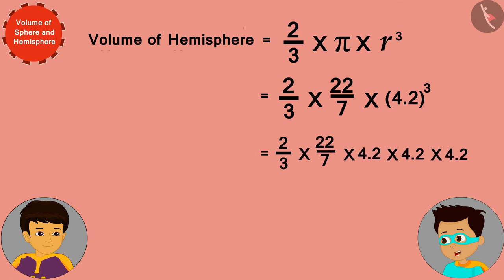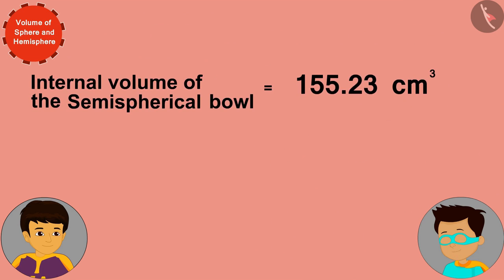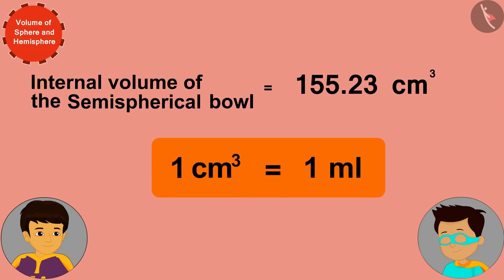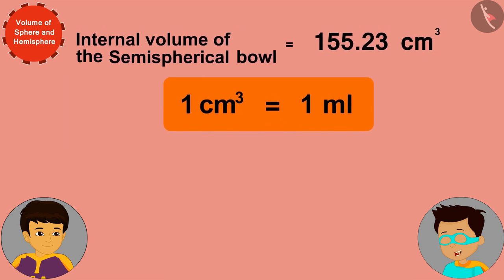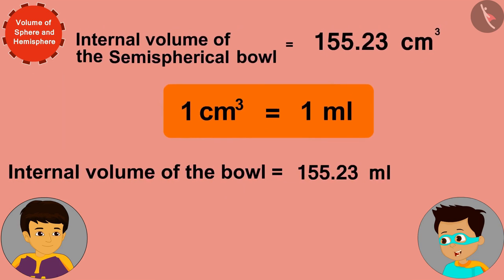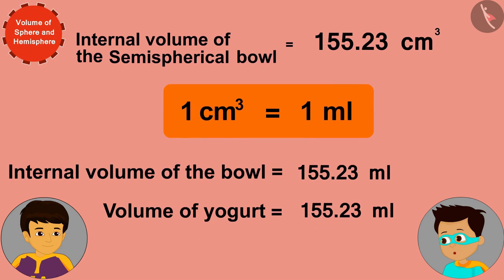The internal volume of the semi-spherical bowl is 155.23 cubic centimeters. Since one cubic centimeter is equal to one milliliter, the internal volume of the bowl — or the volume of yogurt — is 155.23 milliliters.